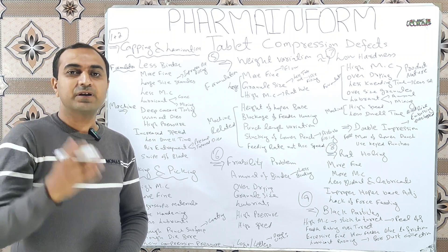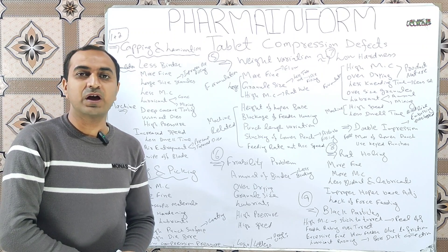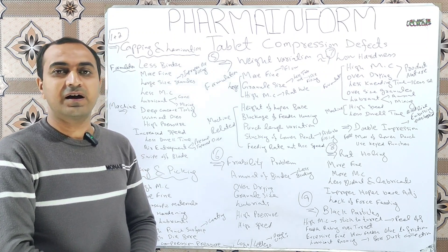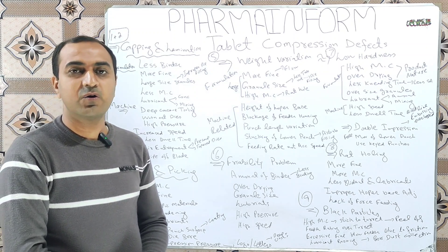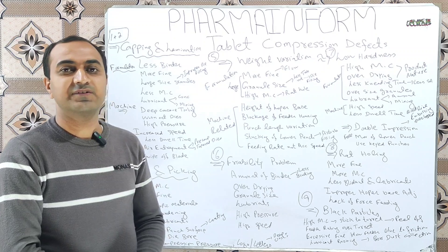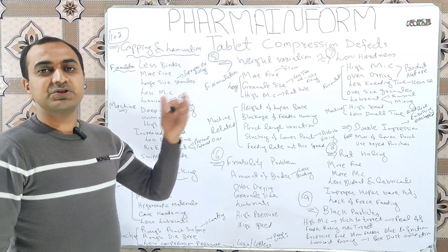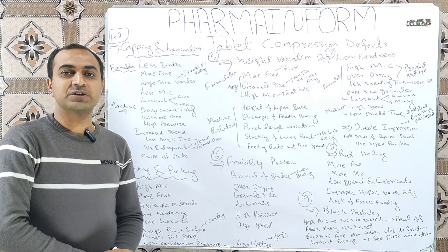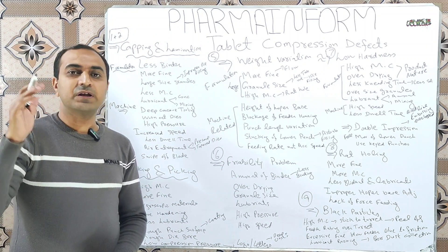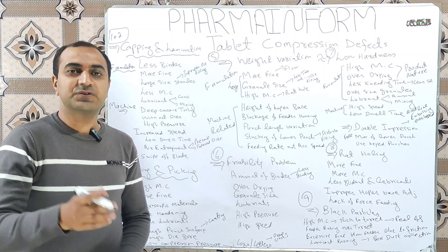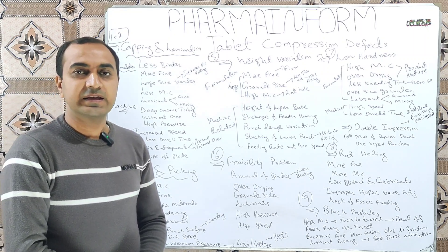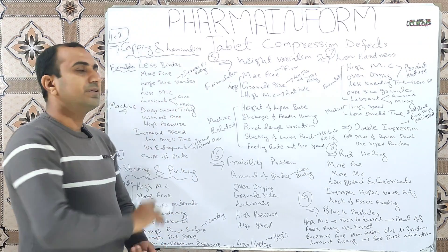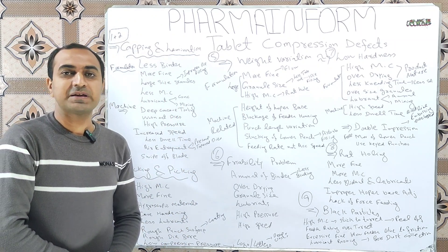Tablet capping is defined as the compression defect where the crown edges of the tablet are broken down. Lamination is a tablet compression defect where the tablet separates into layers.